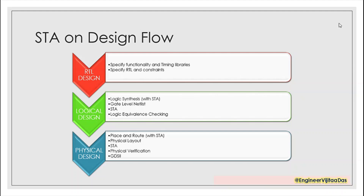In logical design, engineers perform logic synthesis along with STA. Synthesis tools nowadays have a built-in STA engine, so while doing logic synthesis they also check the timing. Once logic synthesis is done it generates a gate-level netlist. After getting the gate-level netlist we again check for timing, and then check for logic equivalence — whether the functionality is the same as the RTL design. The functionality has to be maintained throughout the design flow.